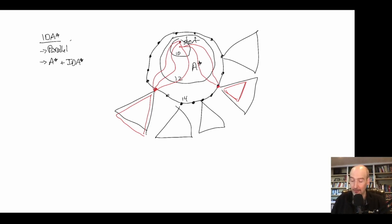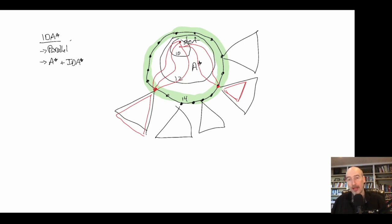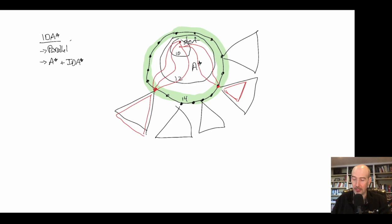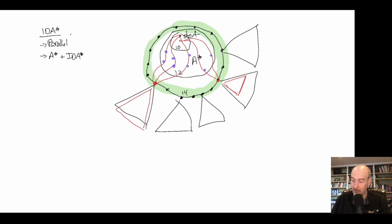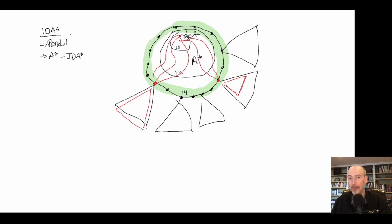A* plus IDA* is simply: run A* to build a frontier, then do IDA* iterations starting from those frontier nodes. This might seem like just IDA* plus a transposition table, but a recent paper by Boo and Korf points out some important differences. Keeping a transposition table with a continuing IDA* search introduces overhead, whereas maintaining the open list and searching directly from it is more efficient, especially when multiple paths have different costs.